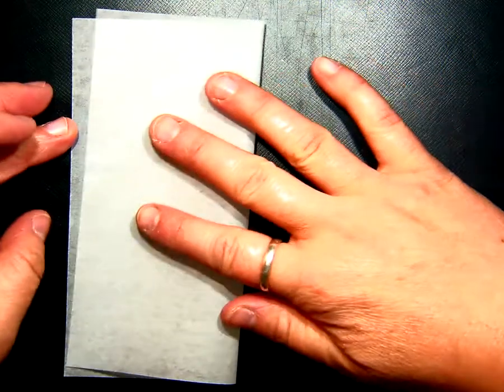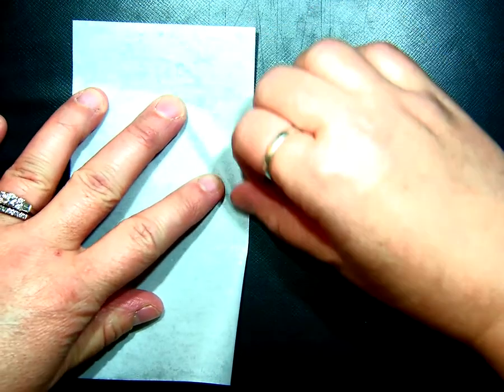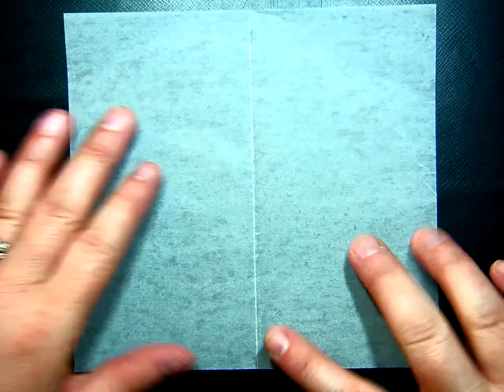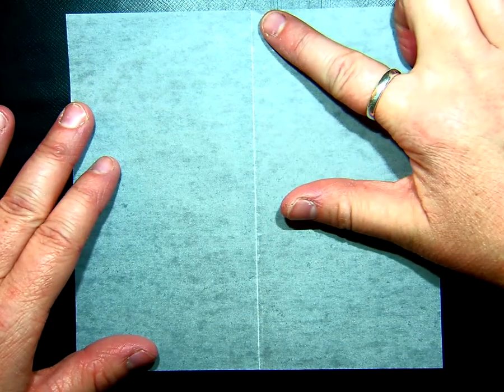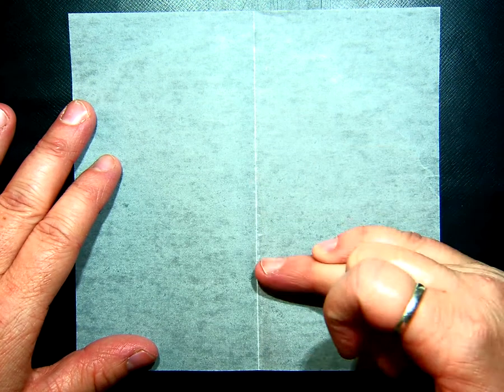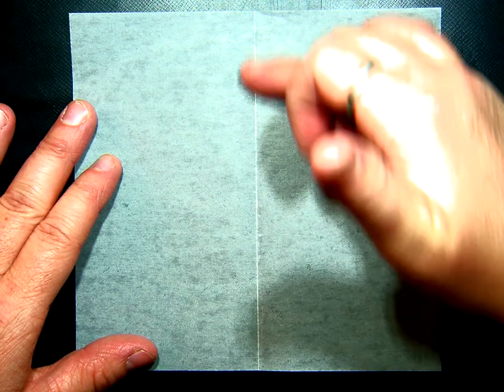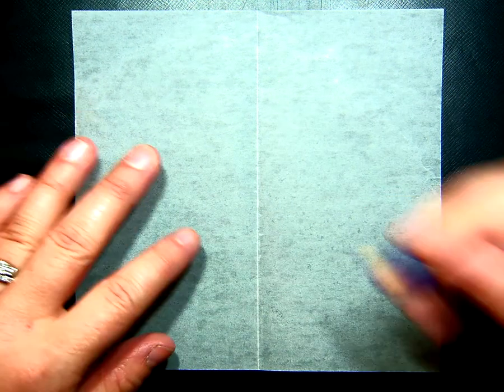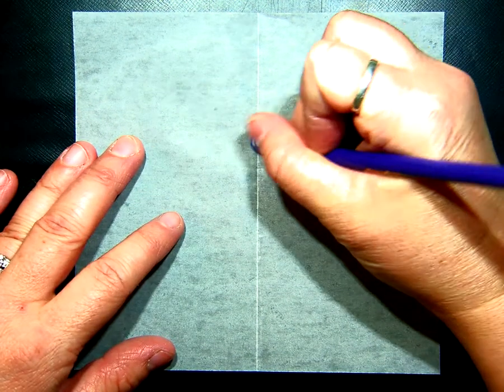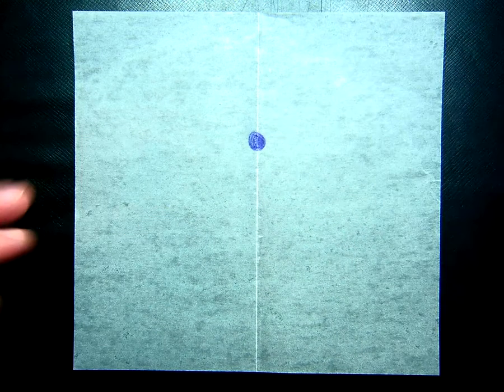First, you're going to take your square and fold it in half. You're going to crease this line, and then mark a point anywhere on this line. The further you go from this baseline down here up, the better your shape will be. I'm going to put a point right there. That's my focus for my parabola.